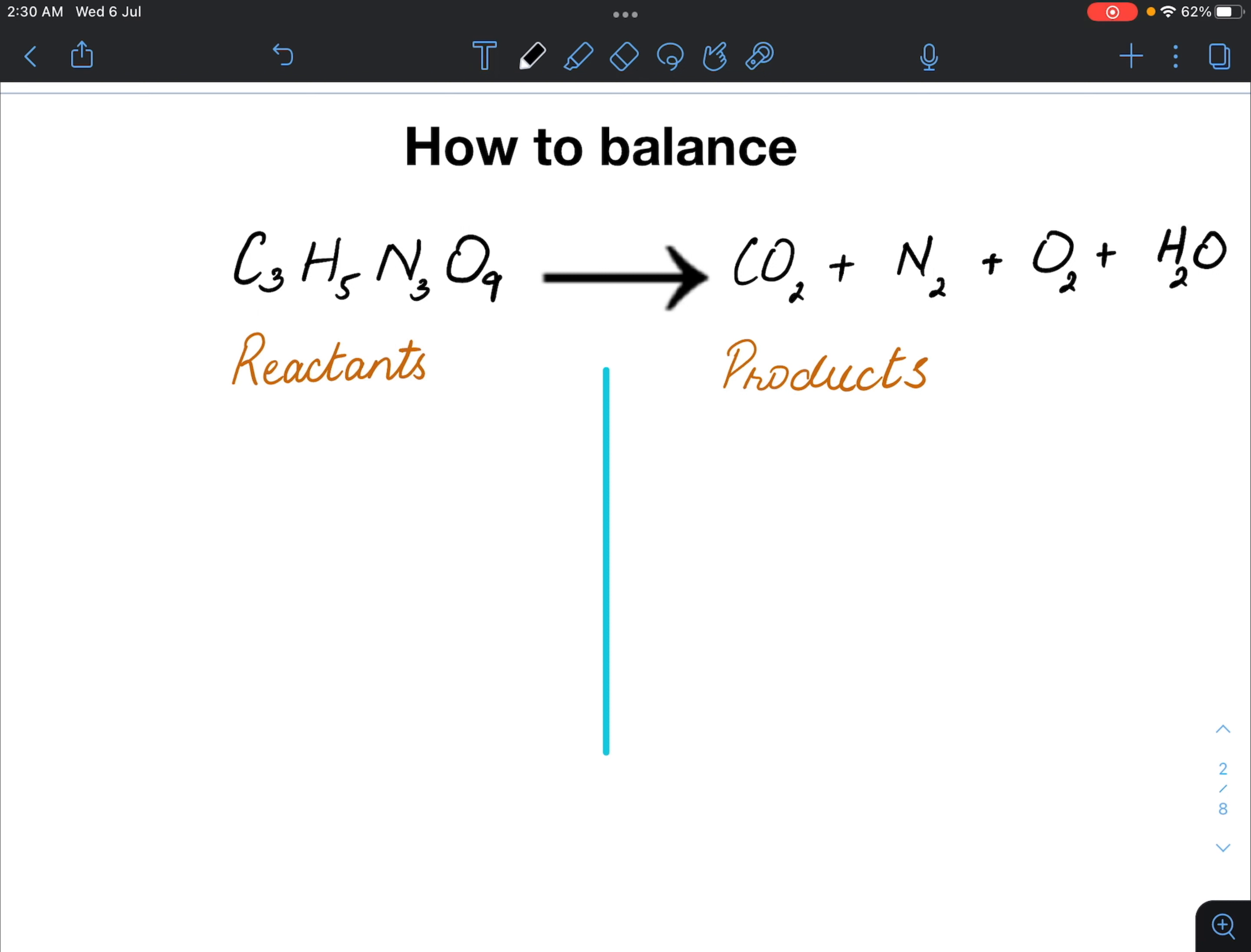Counting the number of atoms at the reactant side, let's see. Carbon equals 3, hydrogen 5, nitrogen 3 and oxygen 9. On the product side, carbon is 1, hydrogen is 2, nitrogen is also 2 and oxygen 2 plus 2 plus 1. What do we get? We get 5.